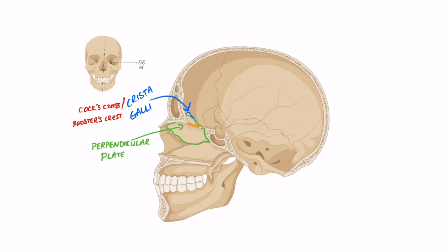And then kind of inferior to that, we can see the perpendicular plate. So what I'm going to need you to do is kind of try to envision the brain sitting where I've just drawn it in red there. And so on the underside of the frontal lobe, we've got that olfactory tract and the olfactory bulb.